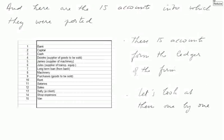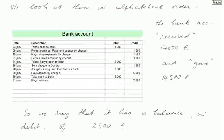Here are the 15 accounts into which they were posted. We list them in alphabetical order: the bank, the capital, the cash, Deirdre's account, James, up to the van account. These 15 accounts form the ledger of the firm. We shall look at them one by one, in alphabetical order, starting with the bank account.